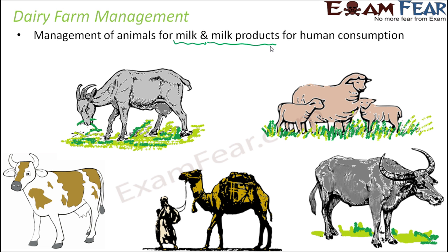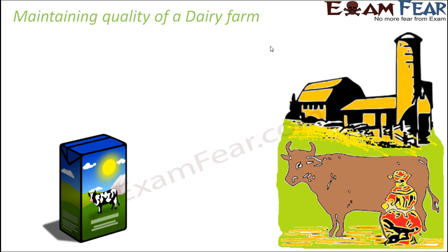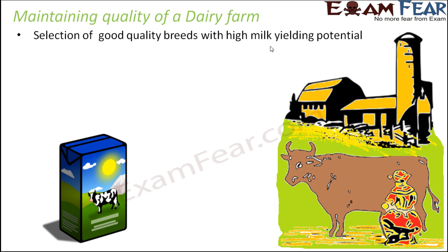How do we maintain the quality of a dairy farm? The first step is selection of good quality breeds with high milk-yielding potential. Certain things are genetic — for example, the milk-yielding potential. Not all cows will produce the same amount of milk. Some have the ability to produce more, some less, and this depends on their body structure and genes. If you compare this with human beings, two human beings do not behave in exactly the same manner because of hormones and genetic differences.